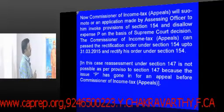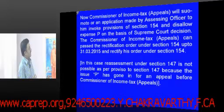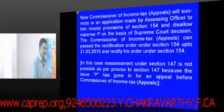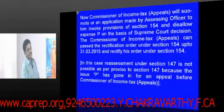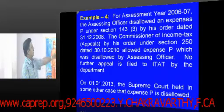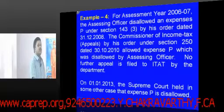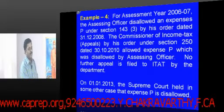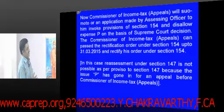The Commissioner of Income Tax can pass the rectification order under section 154 up to 31.3.2015, because the time period for carrying out rectification of a mistake is 4 years. Since the Commissioner of Income Tax passed the order on 30.10.2010, adding 4 years gives us 31.3.2015 as the deadline for rectification.